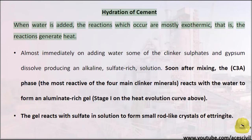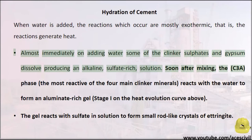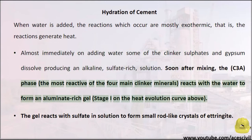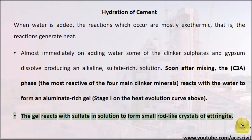Hydration of cement: when water is added, the reactions which occur are mostly exothermic — that is, the reactions generate heat. Almost immediately on adding water, some of the clinker sulfates and gypsum dissolve, producing an alkaline, sulfate-rich solution. Soon after mixing, the C3A phase, the most reactive of the four main clinker minerals, reacts with the water to form an aluminate-rich gel (Stage I on the heat evolution curve). The gel reacts with sulfate in solution to form small rod-like crystals of ettringite.